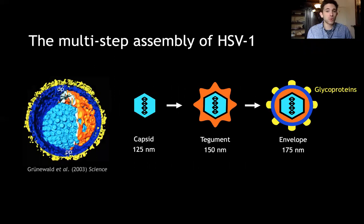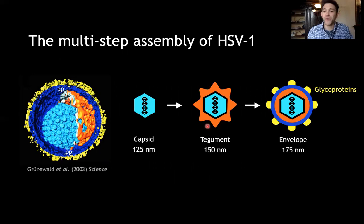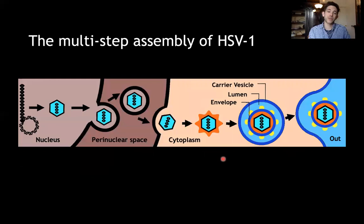Being a large DNA virus, it's actually quite complex and is composed of three different layers. First, it has a capsid, which it uses to encase the genome. In addition to this, it has an amorphous layer of protein called the tegument, which serves various functions. And then finally it has an envelope, which is studded with glycoproteins, some of which are involved in cell-to-cell spread and others involved in immune evasion and other processes. The assembly pathway itself is also quite complex and convoluted.